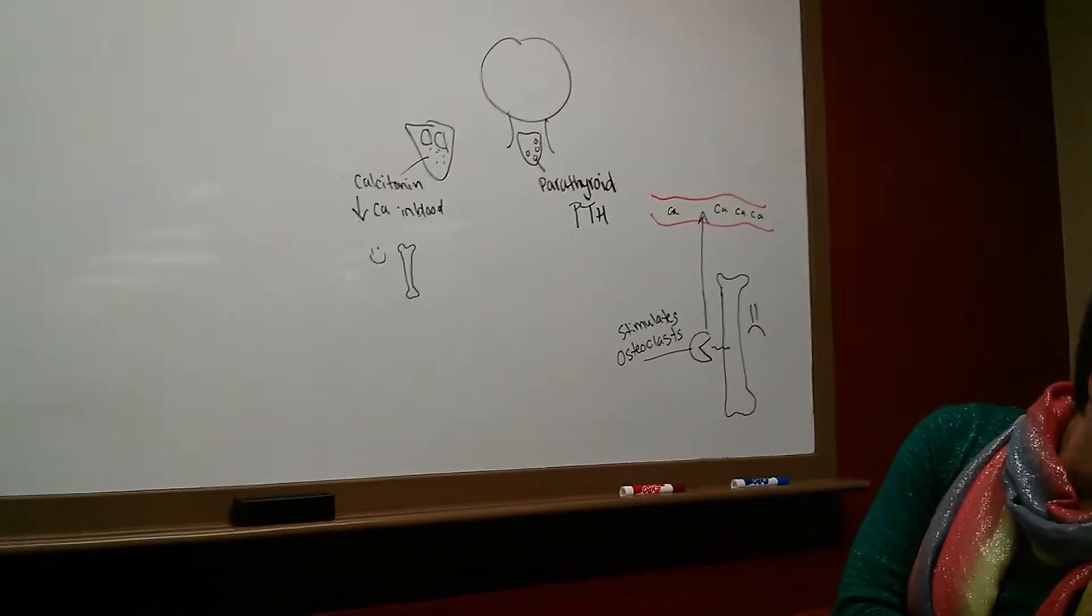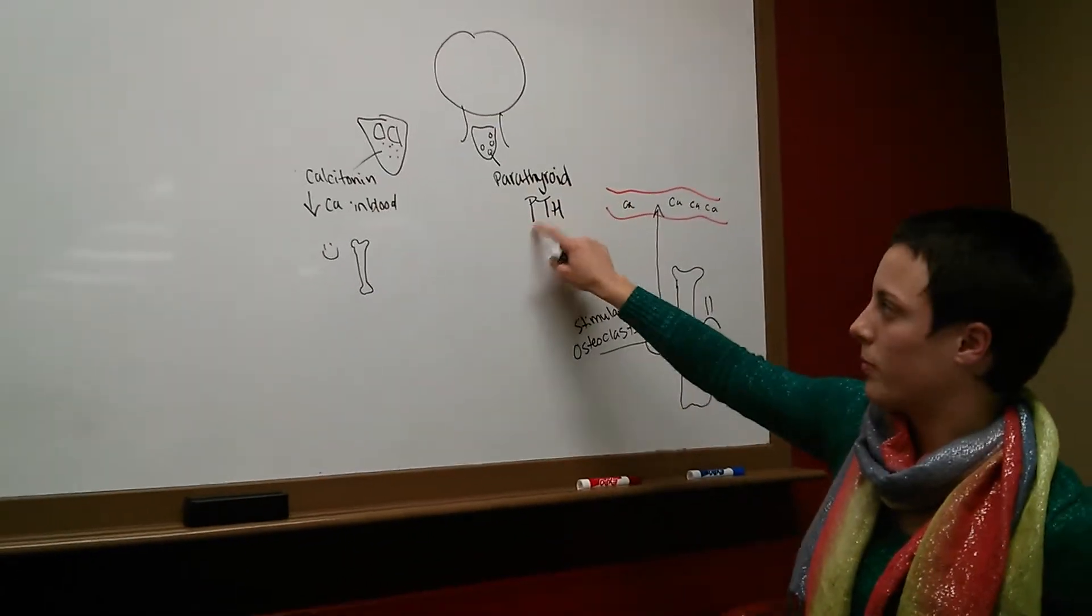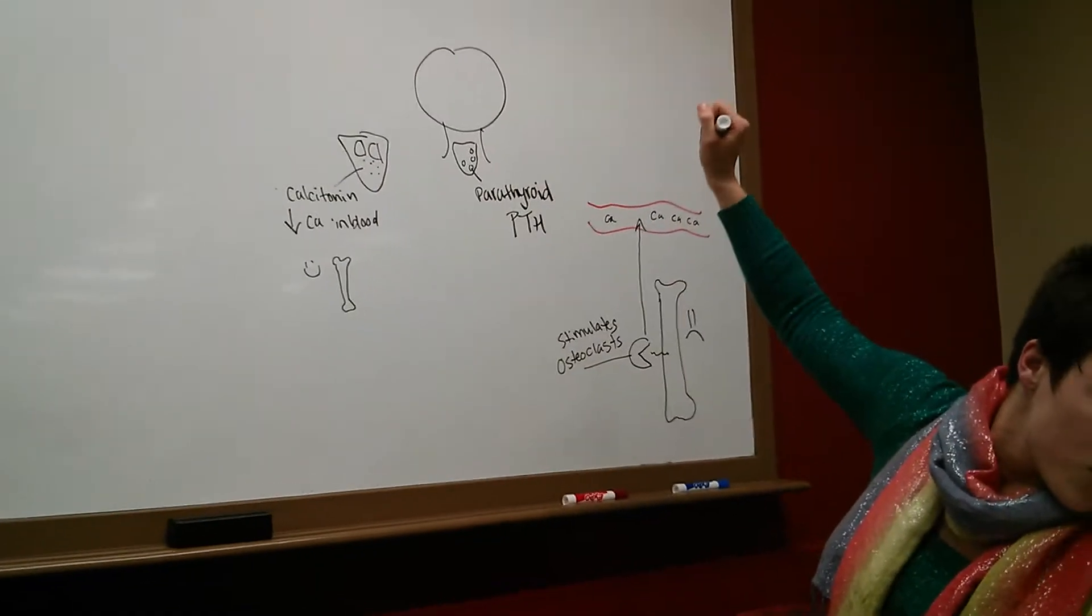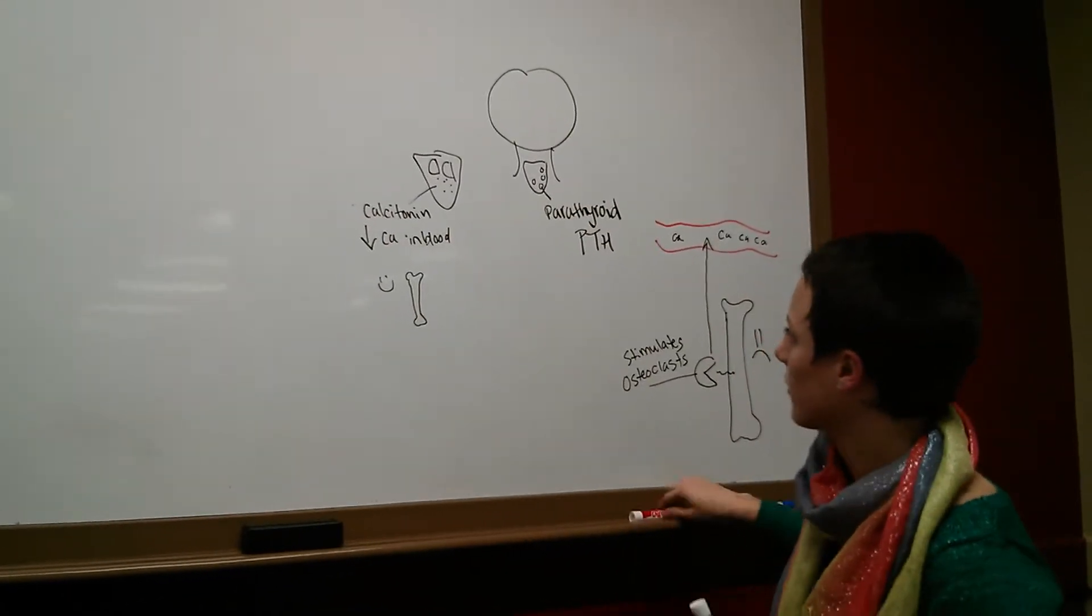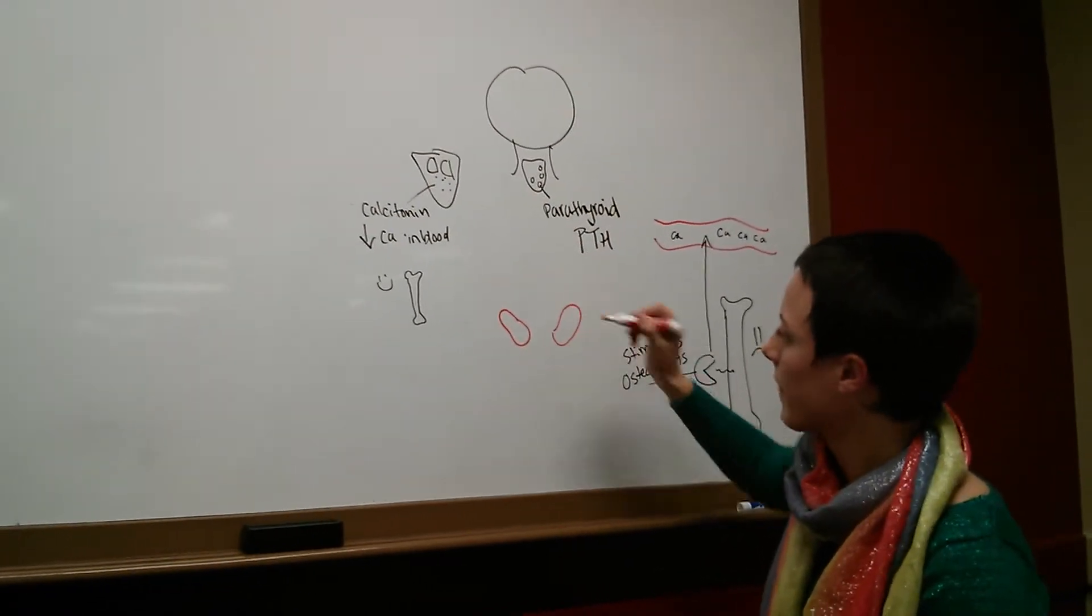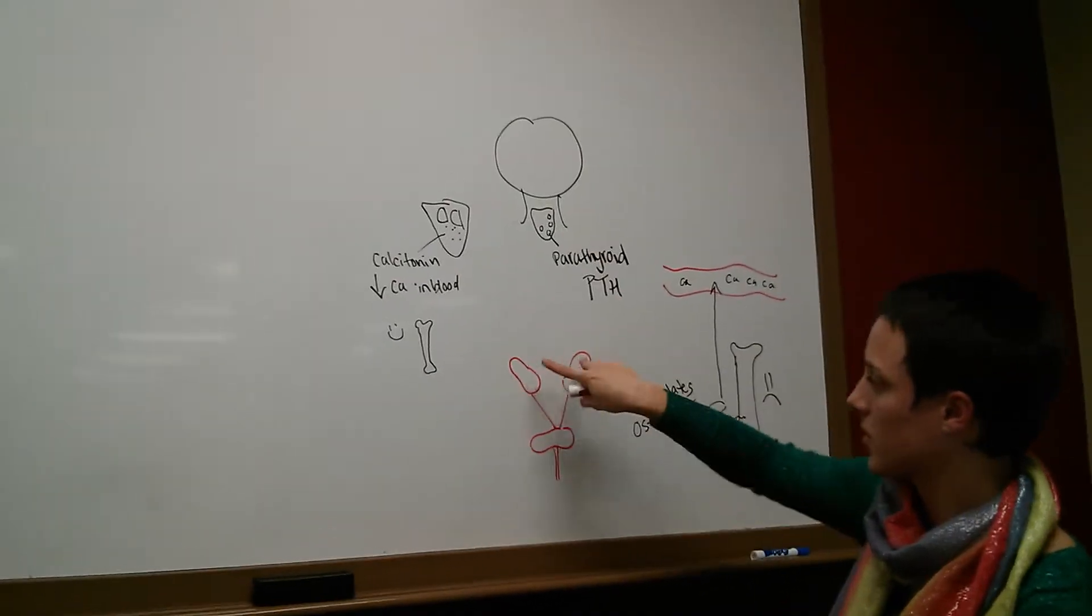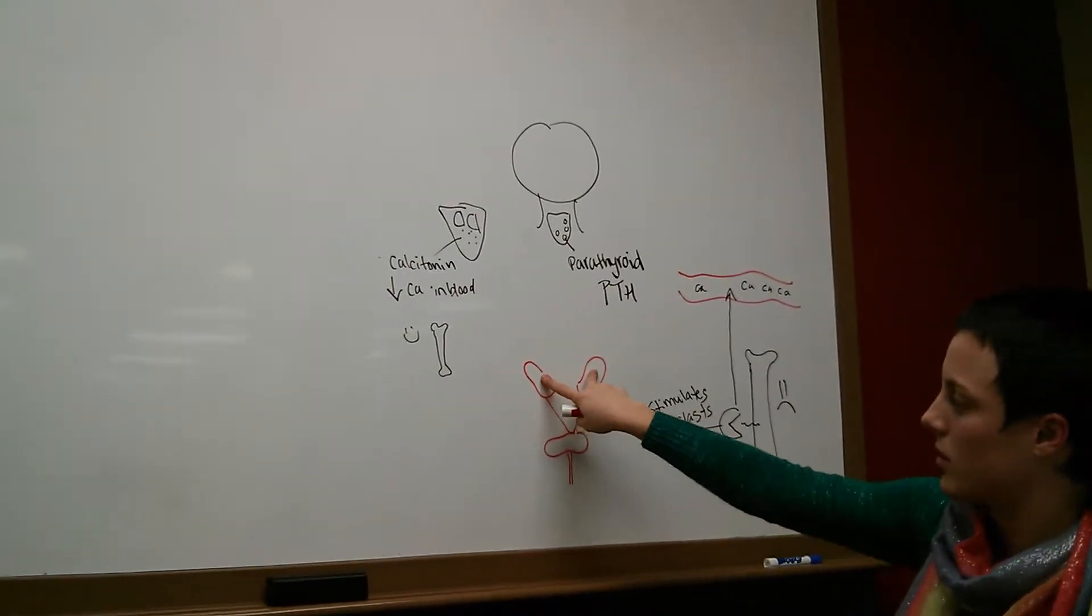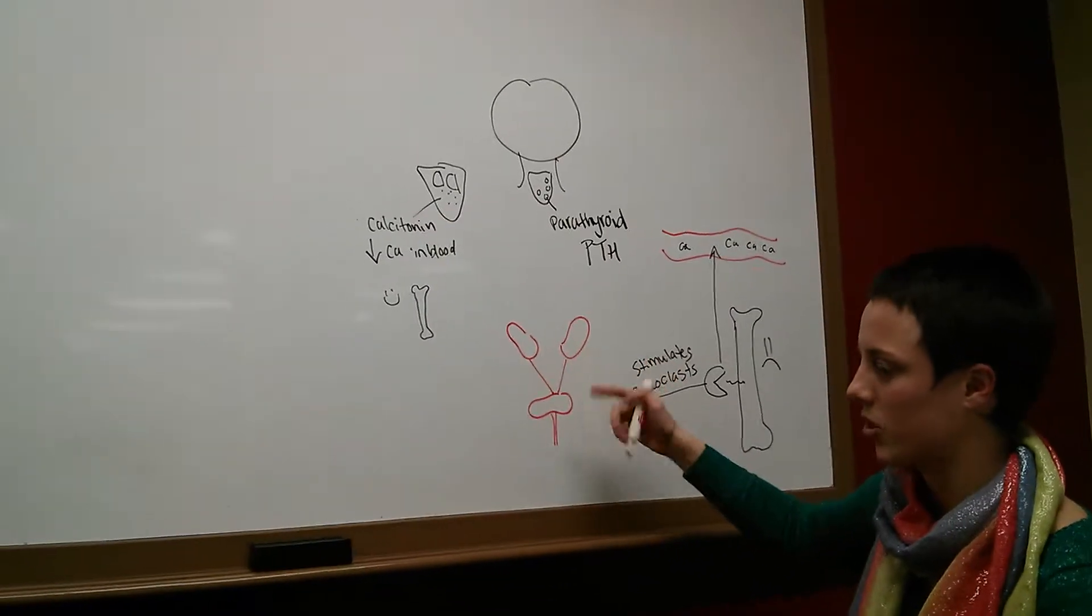Alright. Second thing is that PTH, which is a parathyroid hormone, induces calcium reabsorption in the kidneys. Now, that means, you know, if you go down the body, the kidneys here, what do the kidneys do? What is their function? They make urine. Right. So, these are the two kidneys, and they determine how much pee, basically, you're going to pee out. Here's the bladder. Just go with it.